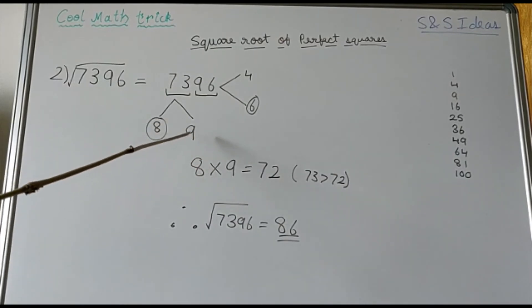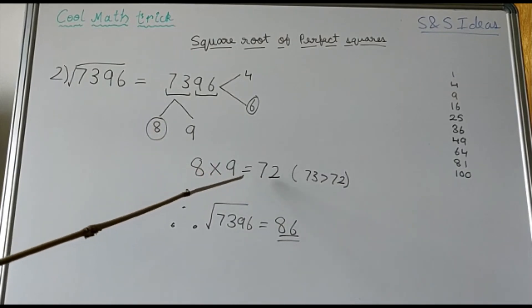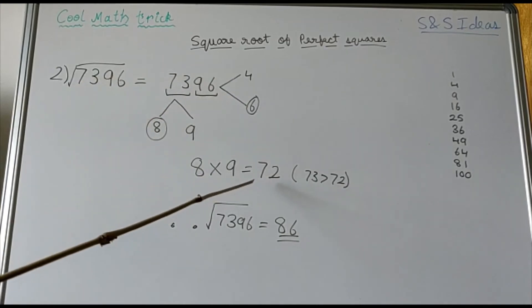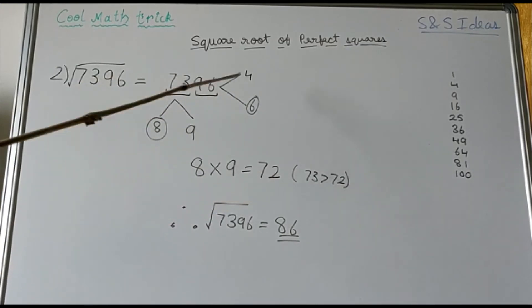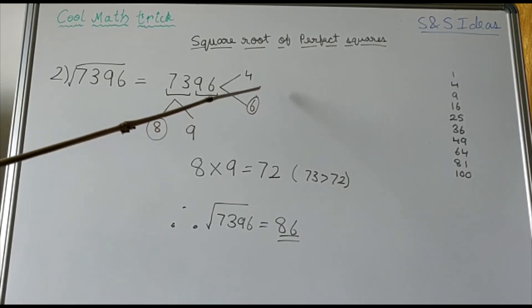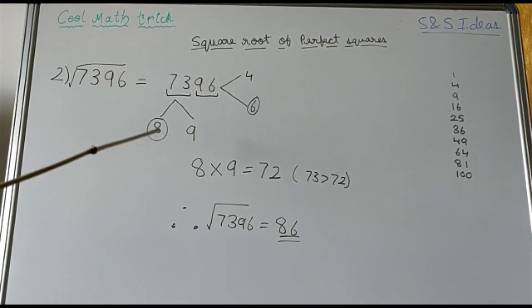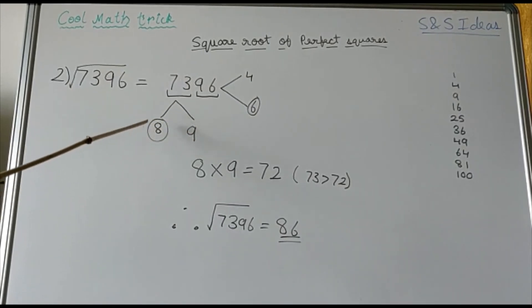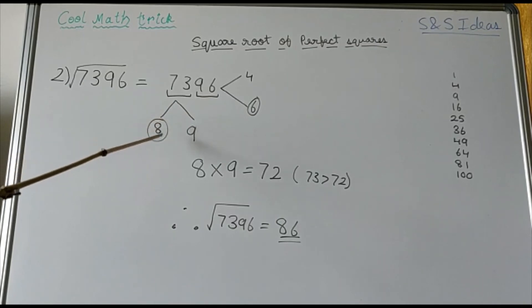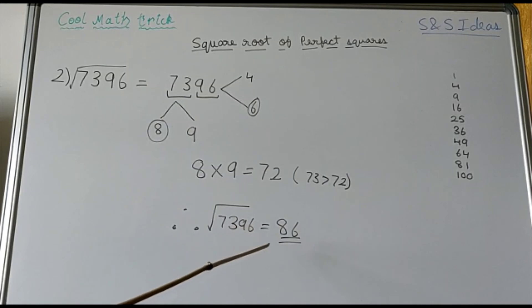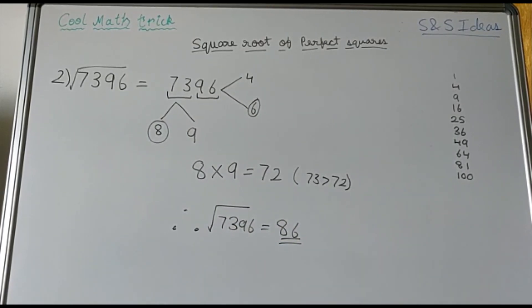Now let us multiply these two numbers: 8 times 9 is equal to 72. We can observe that 73 is greater than 72. Hence we choose the bigger number between the two unit digit possibilities, which is 6, and by default we take the lesser number for the tens place, which is 8. When we put these two numbers together we get 86. Therefore, the square root of 7396 is equal to 86. Hope you understood this trick well. Thank you.